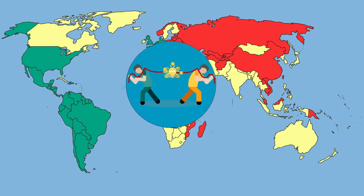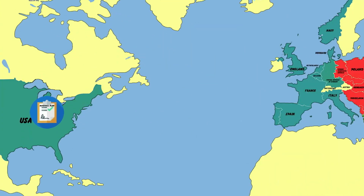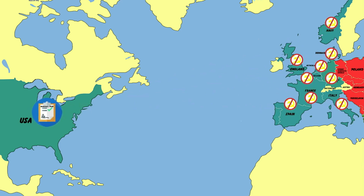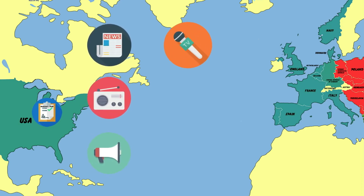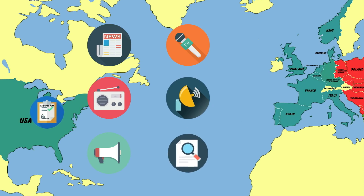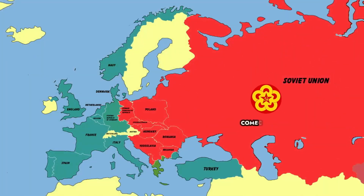The comprehensive economic war began. The United States implemented the Marshall Plan to provide 17 billion dollars in aid to rebuild Western Europe and prevent the spread of communism. Anti-communist propaganda also appeared in every media. In response, the Soviet Union propagated anti-capitalist propaganda and established the Council for Mutual Economic Assistance (SEV) to create an economic alliance between the socialist countries in Eastern Europe.